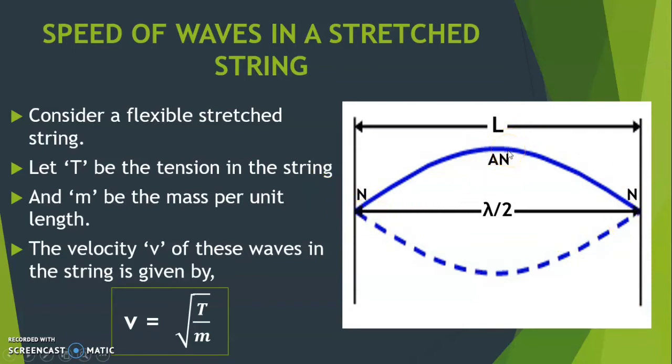The amplitude is minimum at node and maximum at antinode. The distance between two successive nodes is equal to lambda by 2 where lambda is the wavelength. And L be the distance between two fixed supports.